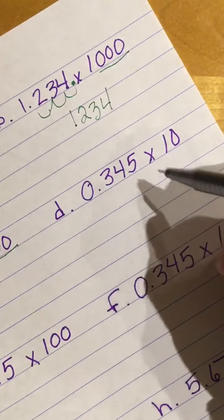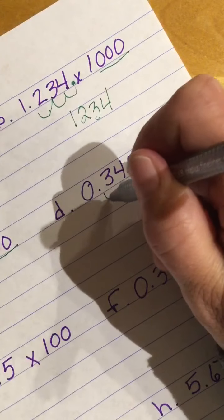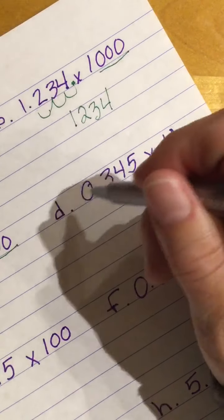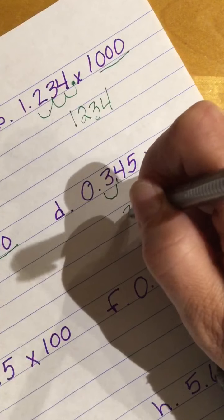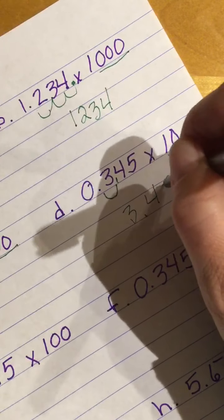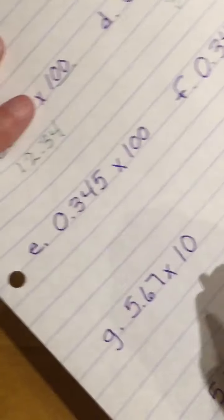D, I am shifting 1, because I have one 0. One place. So I am going to have 3 and 45 hundredths.